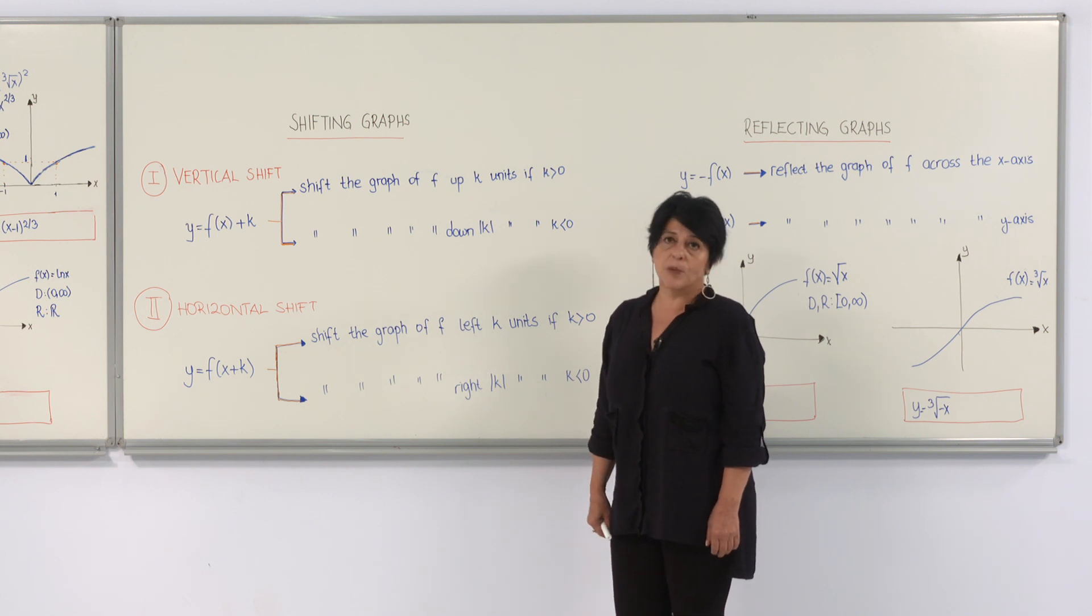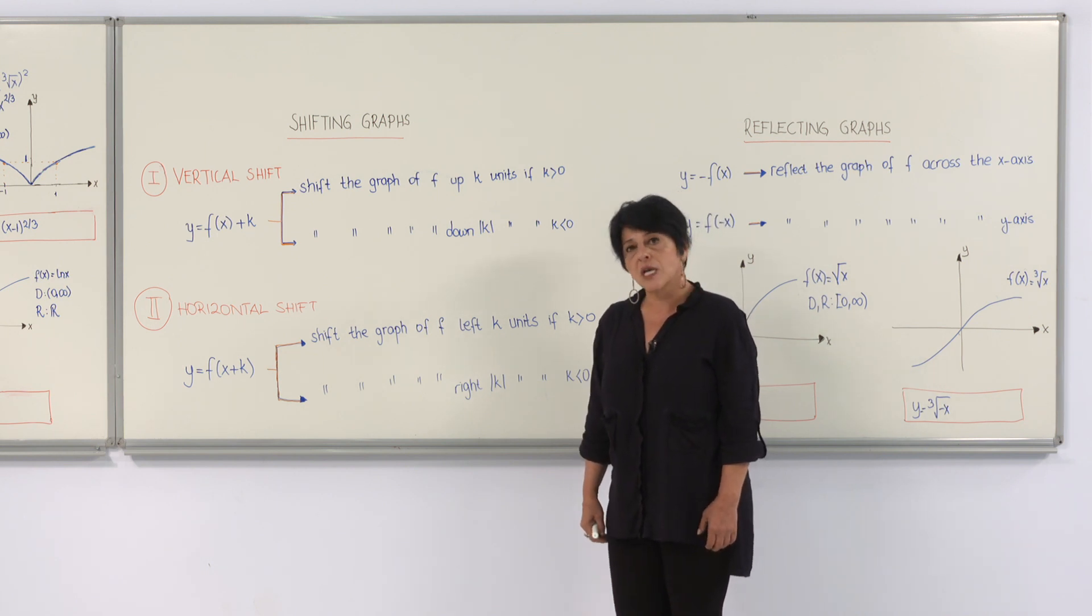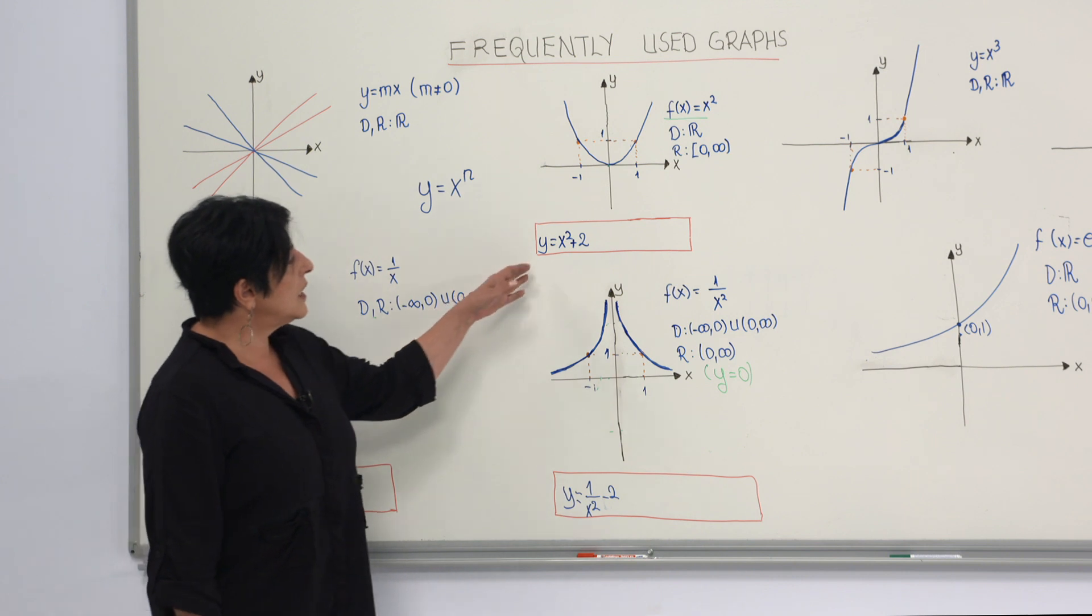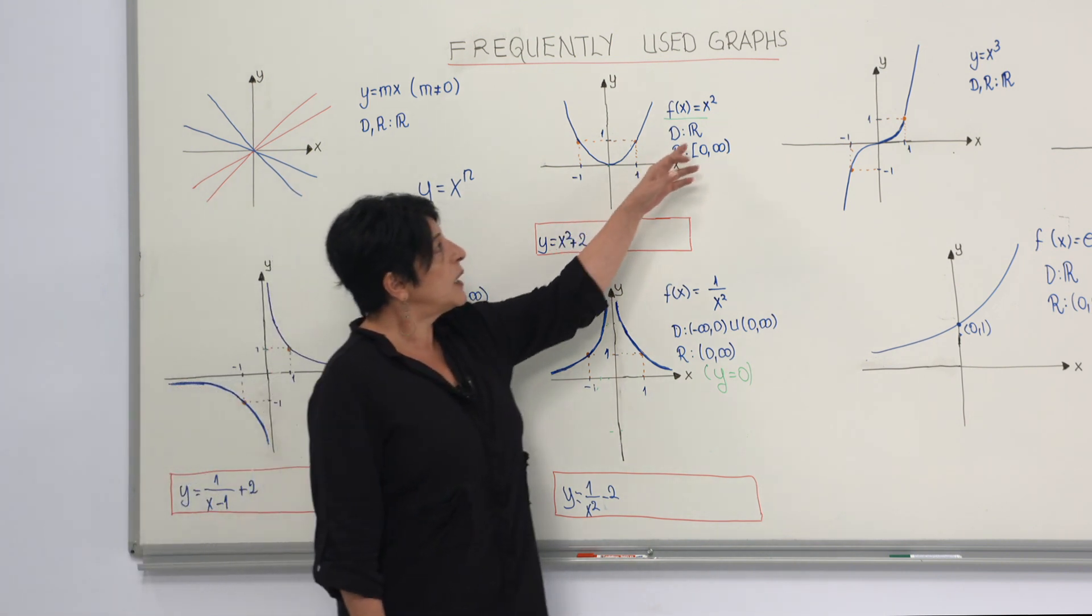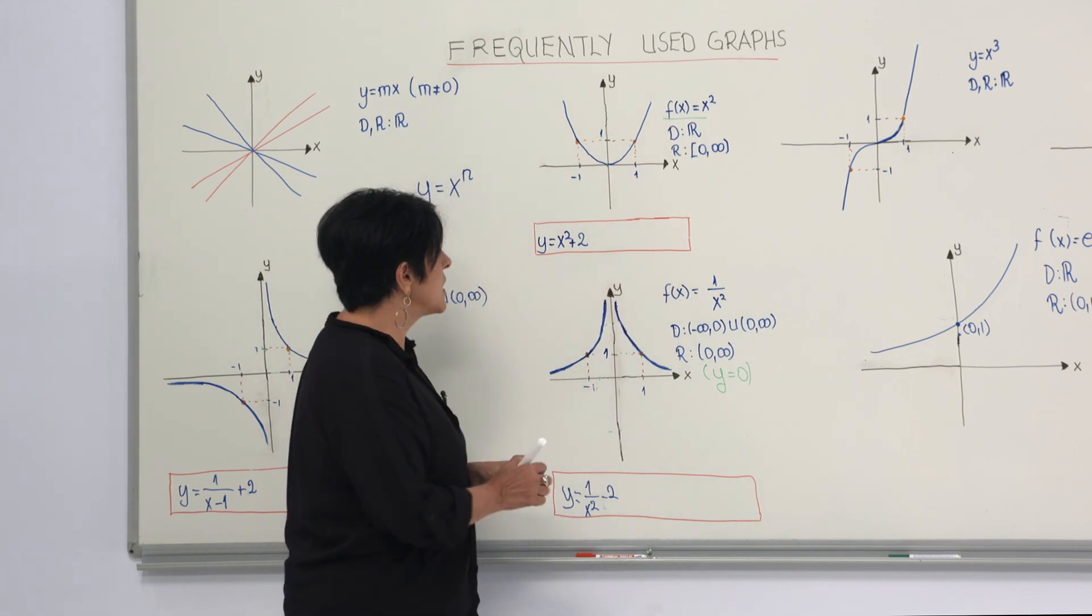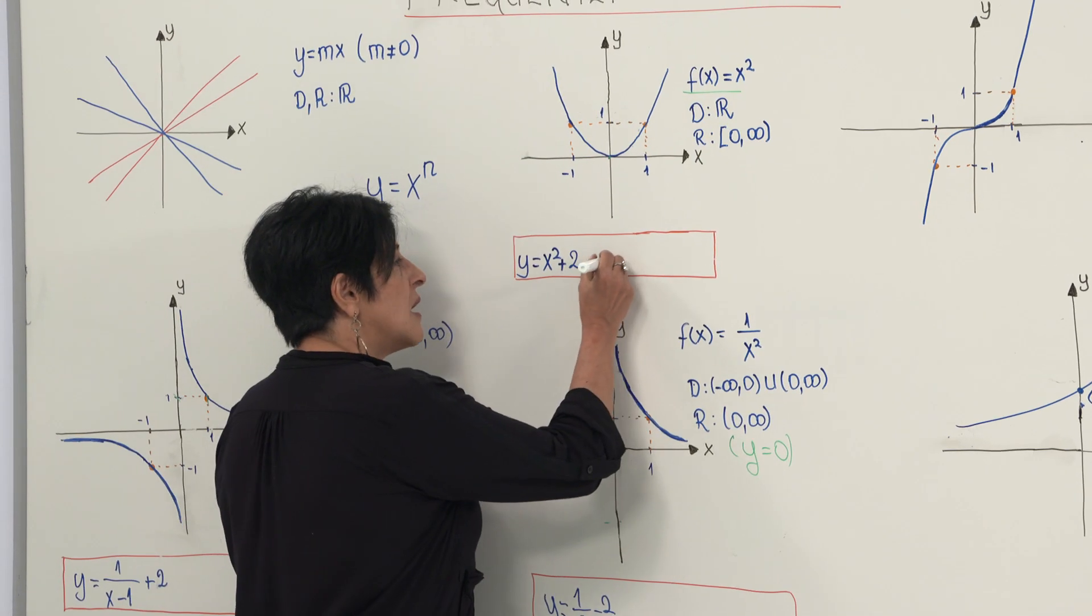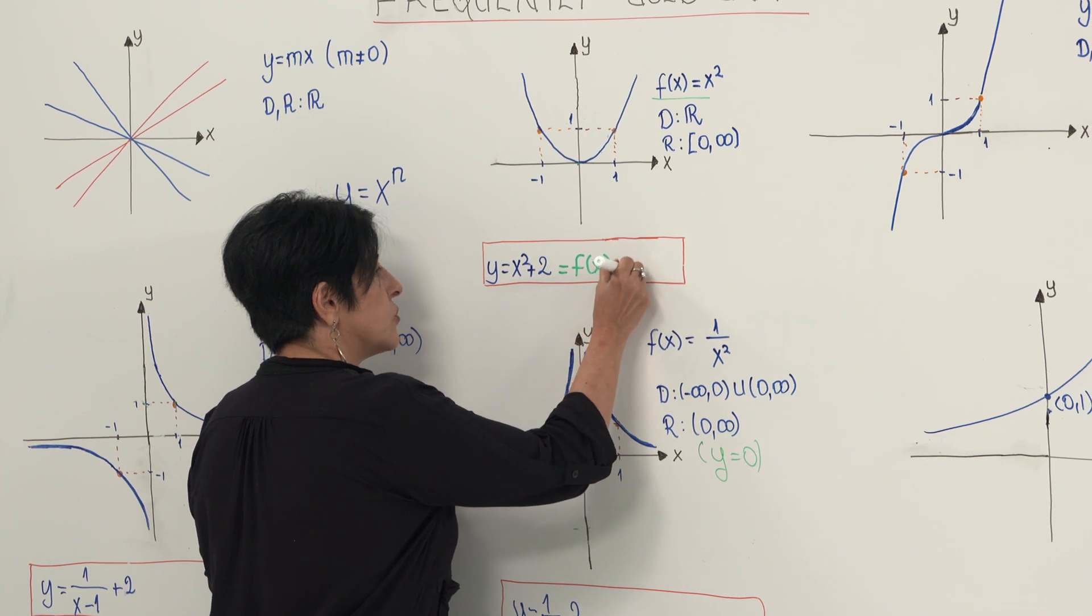Now, let's see several examples to understand the concept better. Now, let's try to graph y equals x squared plus 2. Now, if we call x squared to be f(x), we can express x squared plus 2 as f(x) plus 2.